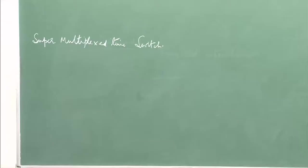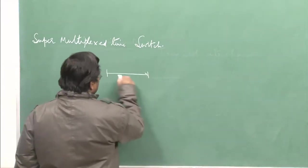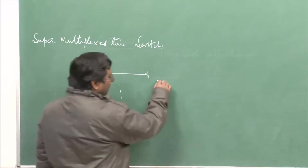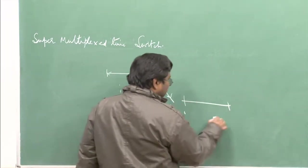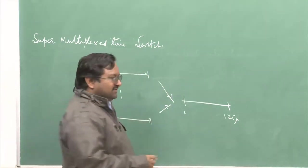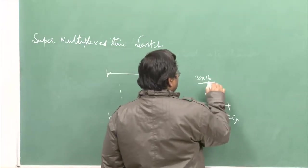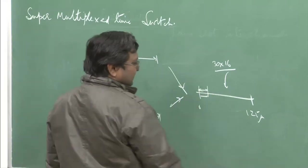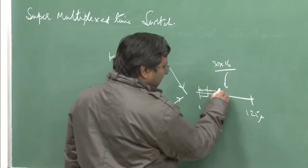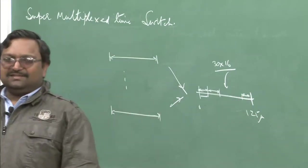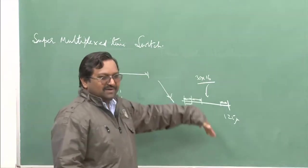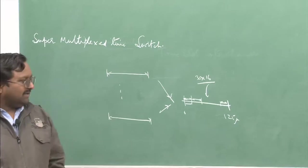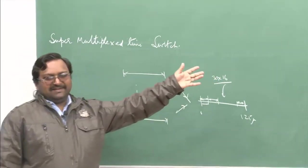The trick: all 16 incoming frames are 125 μs duration. If they are all synchronized, you can combine all 16 and create one super frame — again 125 μs — but now with 30×16 octets inside it. You take the first frame, compress it in time, push it in; the second is compressed and pushed in; and the 16th is pushed in last. This is known as super multiplexing — multiplexing of already multiplexed streams.